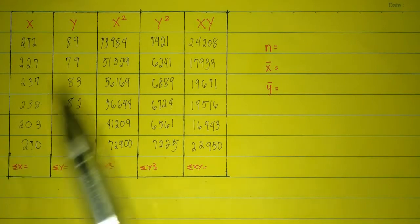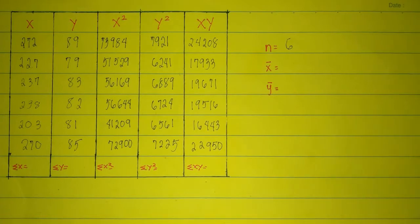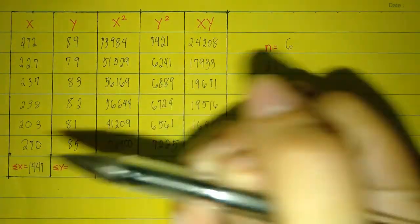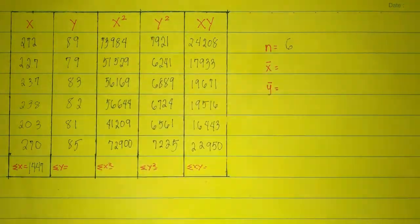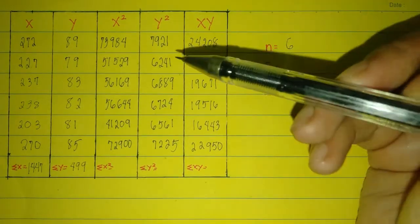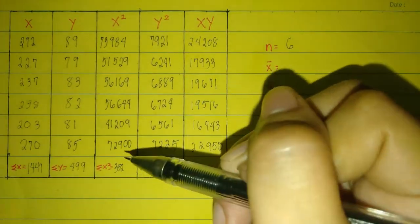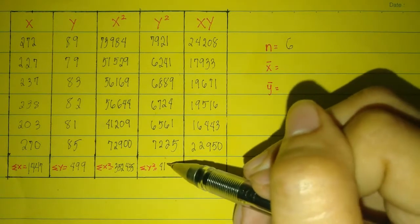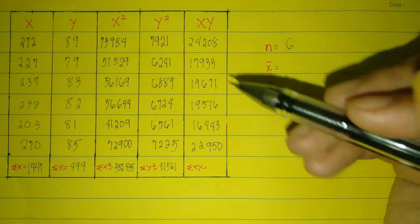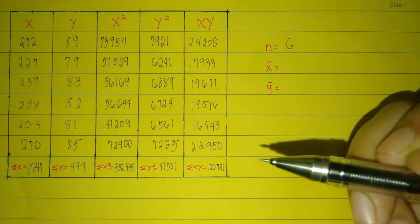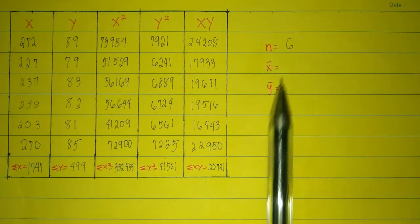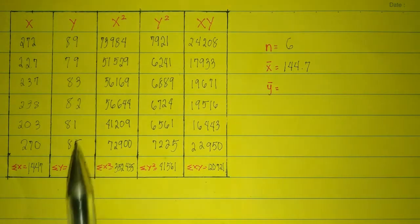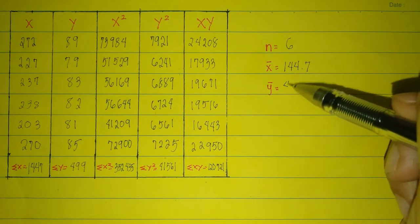To get n, count all — the total is 6. To get the summation of x, add all — the answer is 1,447. To get the summation of y, the answer is 499. The summation of x squared is 352,435. The summation of y squared is 41,561. To get the average of x, the summation of x divided by 6 is 144.7. To get the average of y, the summation of y divided by 6 is 49.9.